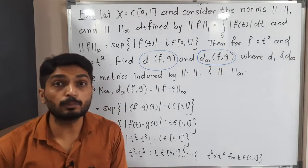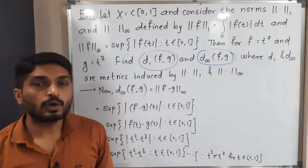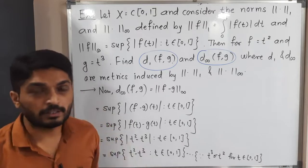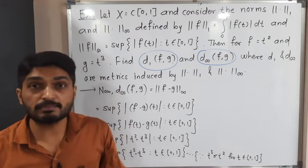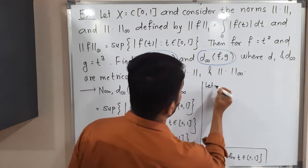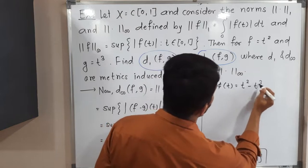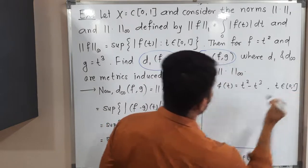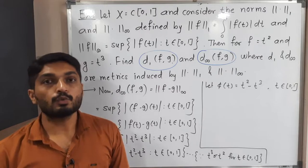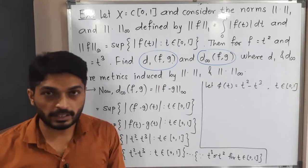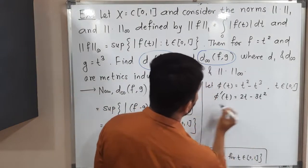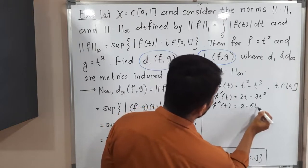Now the task is to find the supremum, meaning we must find the maximum of t² − t³. Let φ(t) = t² − t³ for t in [0,1]. We solve it separately using the standard maxima-minima procedure. The first derivative is φ'(t) = 2t − 3t², and the second derivative is φ''(t) = 2 − 6t.